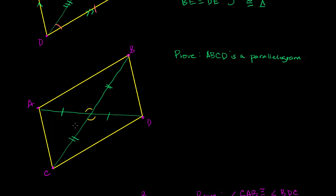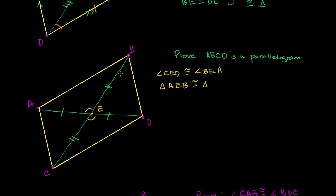To do that, we just have to remind ourselves that this angle is going to be equal to that angle because they are vertical angles. So angle CED is congruent to angle BEA. That shows us that these two triangles are congruent because we have corresponding sides that are congruent, an angle in between, and then another side. So triangle AEB is congruent to triangle DEC by side-angle-side congruency.